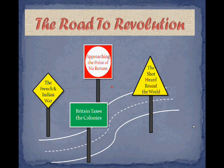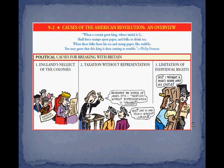Let's take a moment to look at the big picture here — all of the reasons that caused the American Revolution. I love this quote at the top by Philip Freneau: 'When a certain king whose initial is G shall force stamps upon paper and folks to drink tea, when these folks burn his tea and stamp paper like stubble, you may guess that this king is then coming to trouble.'